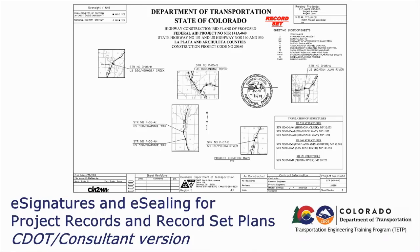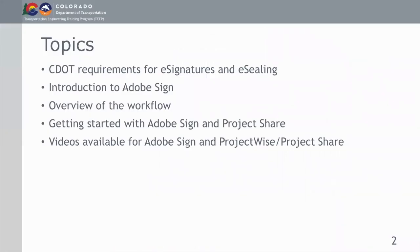Welcome to the training videos regarding e-signatures and e-sealing for project records and record set plans. This series of videos will cover the training required to understand how CDOT uses electronic signatures for sealing general documents that are basic or less complex, and more complex documents. Topics include the requirements for e-signatures and sealing, an introduction to Adobe Sign, an overview of the workflow, and getting started with Adobe Sign and Project Share. The videos are available for Adobe Sign, ProjectWise, and Project Share.